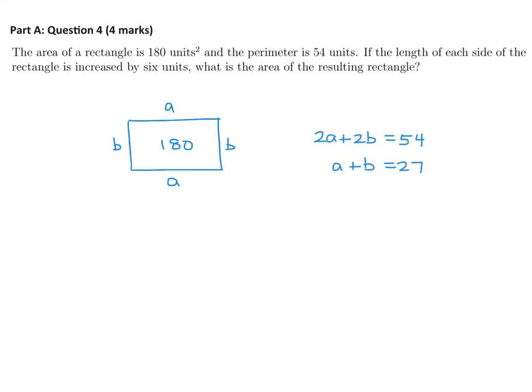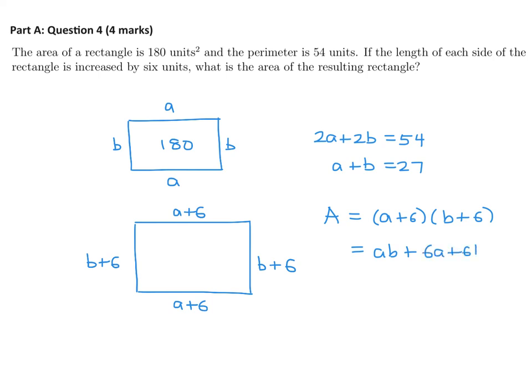Then they tell me that if I took this rectangle and made it a little bit bigger, meaning I'm increasing each side length by six. So this becomes A plus six. This becomes B plus six. If I do that, then the area is what I have to figure out. Well, obviously the area is length times width, which is A plus six times B plus six. So let's expand this. So this would be AB plus 6A plus 6B plus 36.